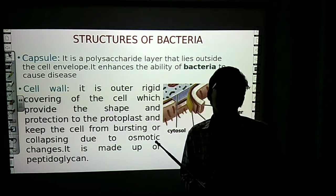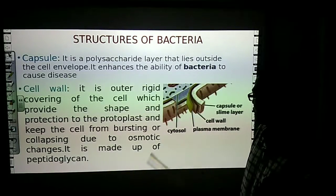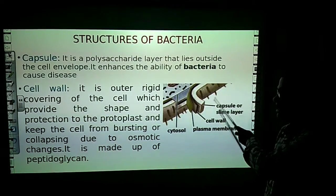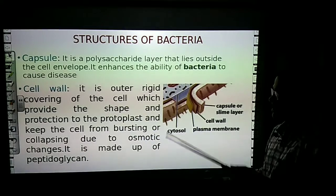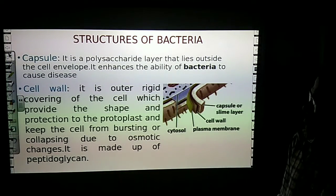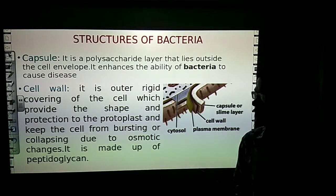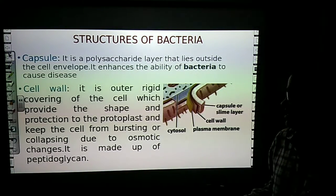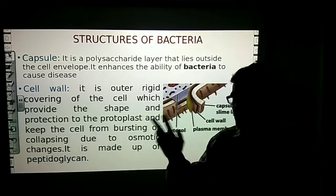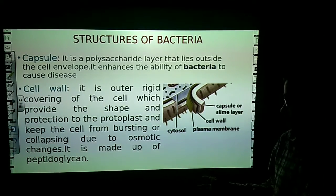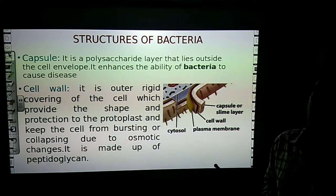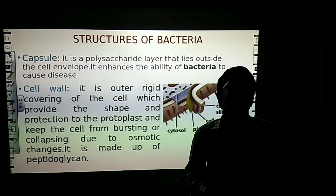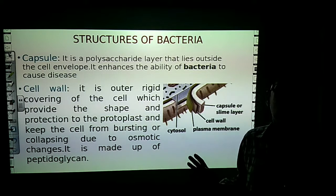Just inside the capsule is the cell wall. The capsule is also called the slime layer. The cell wall is the covering of the bacterial cell which provides shape and protection to the bacterial protoplast. It keeps the cell from bursting and collapsing due to osmotic changes in the environment. The cell wall is made up of peptidoglycans, which is a type of polysaccharide.